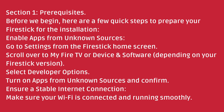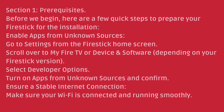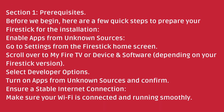Prerequisites. Before we begin, here are a few quick steps to prepare your Fire Stick for the installation. First, enable apps from unknown sources. Go to Settings from the Fire Stick home screen, scroll over to My Fire TV or Device, then Developer Options — depending on your Fire Stick version. Select Developer Options and turn on Apps from Unknown Sources, then confirm.